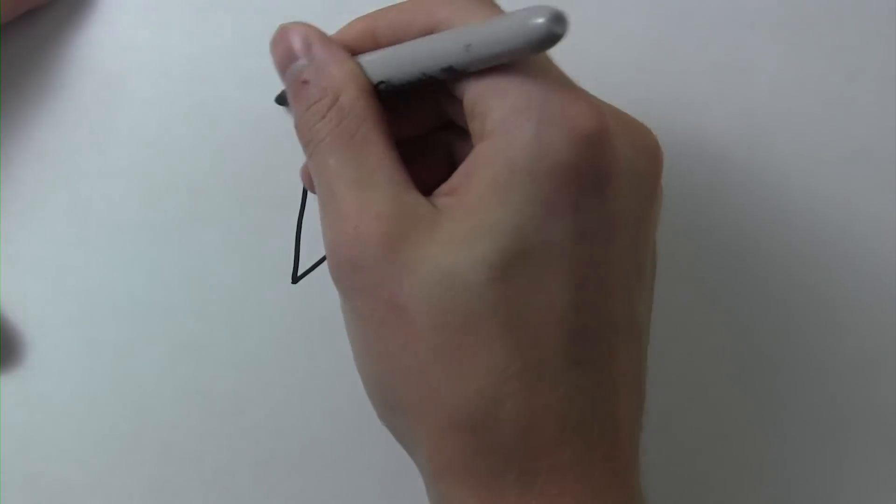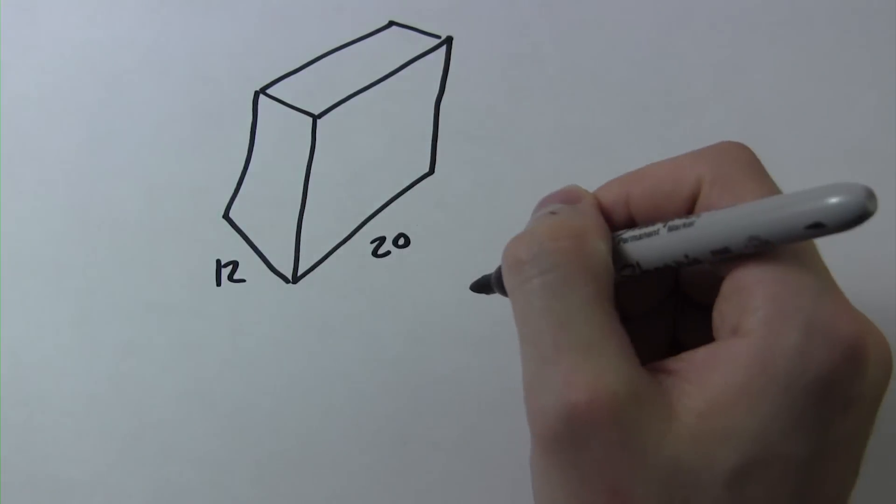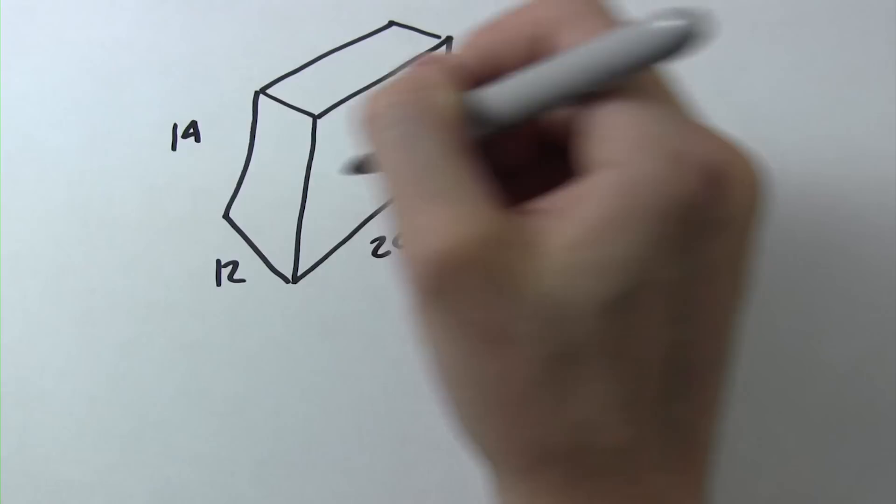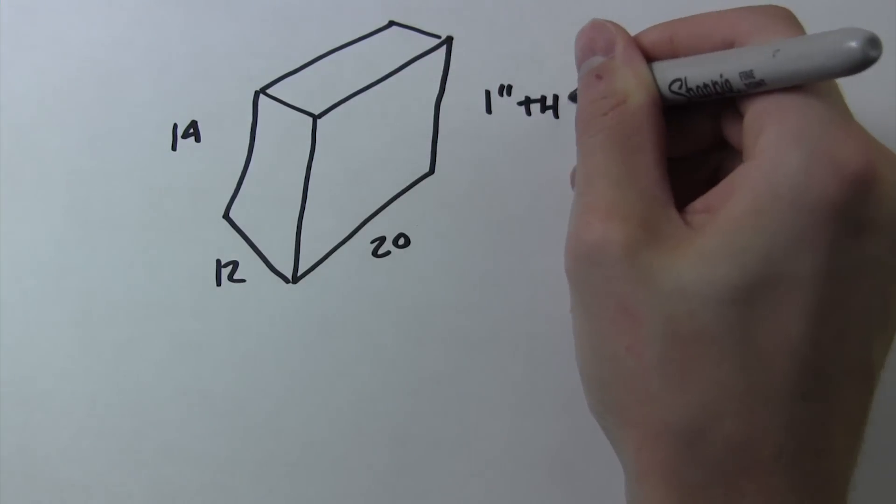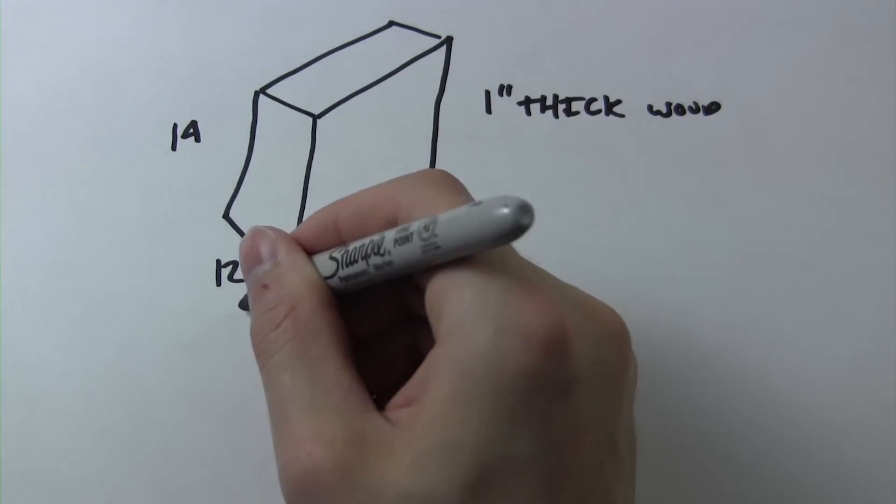Now what about the wooden sides of the box? How does that apply to the volume? Well, as an example, let's say that we have 1 inch thick wood. And we have a box that's sized 14 inches by 12 inches by 20 inches.